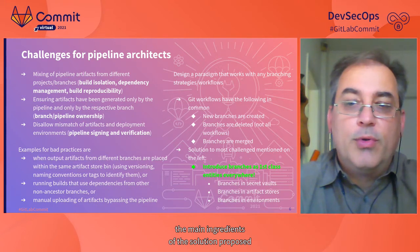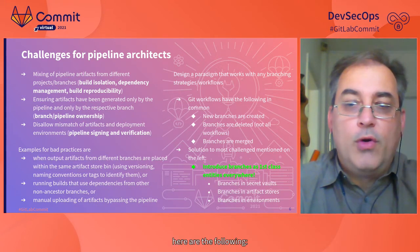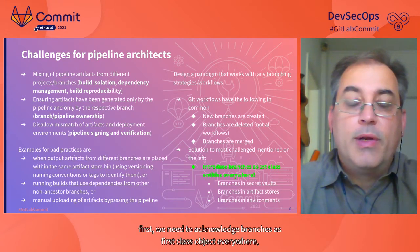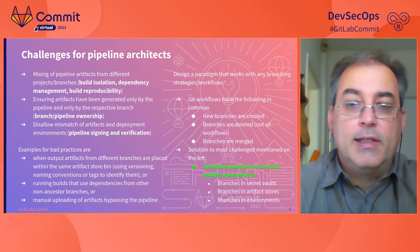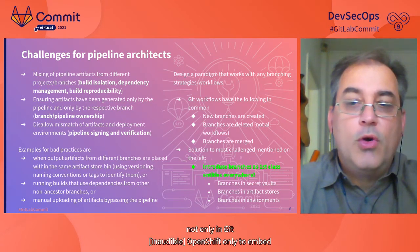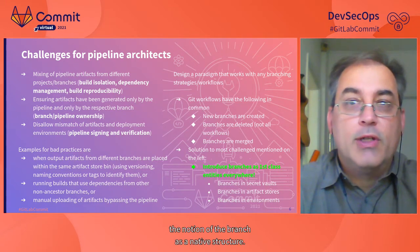The main two ingredients of the solution proposed here are the following. First, we need to acknowledge branches as first-class objects everywhere — not only in Git. Vault, Artifactory, and OpenShift all need to embed the notion of the branch as a native structure.